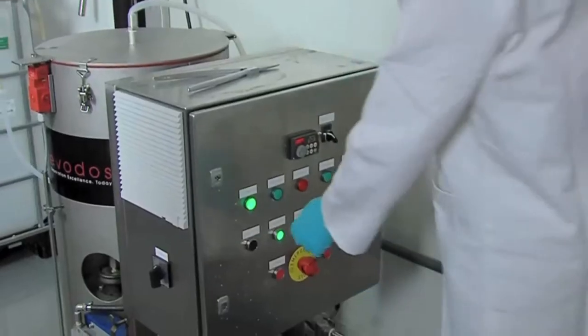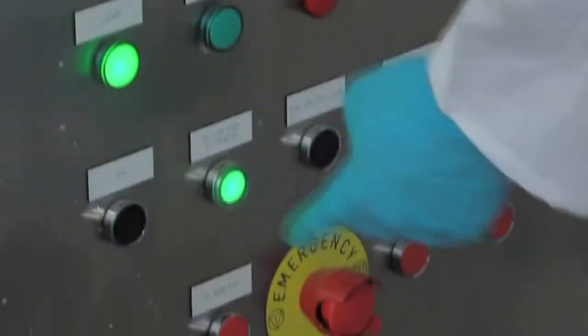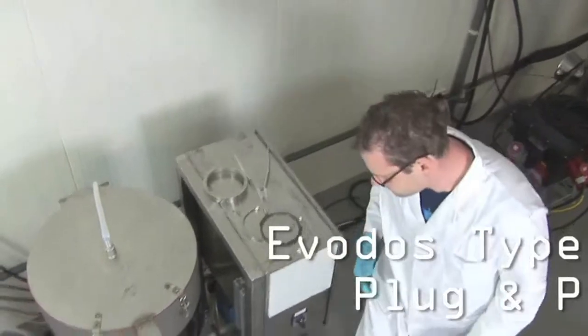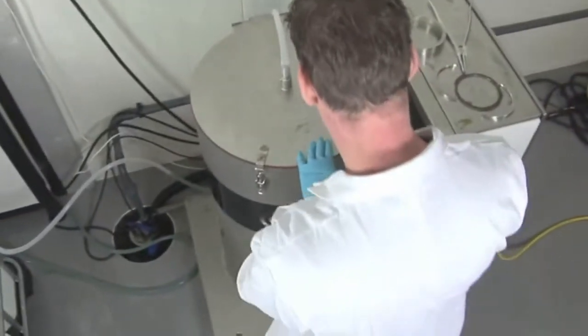The Type 10 is easy to operate. The machine is plug and play. You only level it horizontally, put in the power plug and there you go. Of course, the Evodos team assists you with the first runs. And they are always open for questions or recommendations.